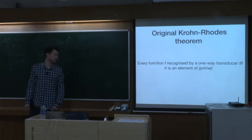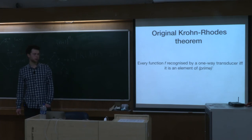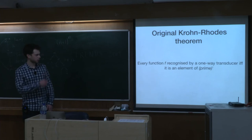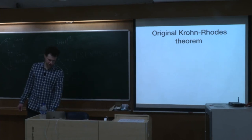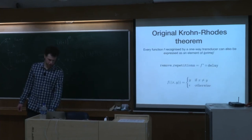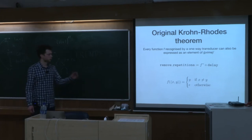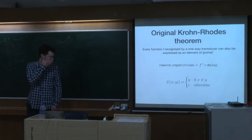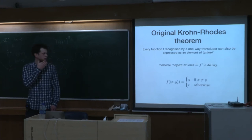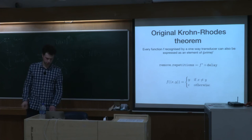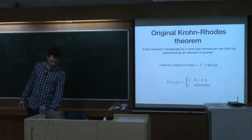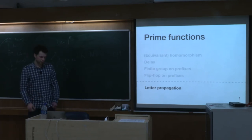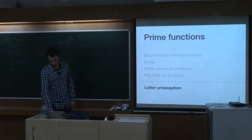For the original Krohn-Rhodes theorem, a function f is recognized by a one-way transducer with a classical finite alphabet if and only if it is a composition of those prime functions. For example, 'remove repetitions' is just a homomorphism that filters out the equal pairs. When we want to handle the infinite alphabet case, we need one more prime function: letter propagation.